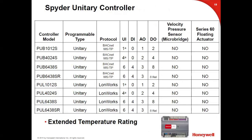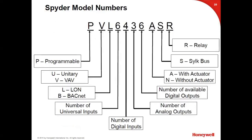The unitary controller follows the same naming convention. The BACnet and LON unitaries are shown together on one chart. In summary: 'P' = programmable, second character = unitary or VAV, third = LON or BACnet, then four digits for I/O point counts. If there's an 'R' at the end of the part number, it has relay outputs; without 'R', the digital outputs are triacs. All controllers now have the Silk bus ('S'). An older version without Silk would be a very old controller.